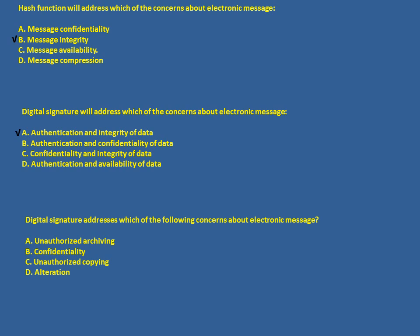Third question: a digital signature addresses which of the following concerns about the electronic message? The answer is integrity — meaning the message has not been altered. It will not ensure any archiving, confidentiality, or copying concerns.